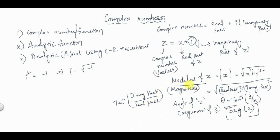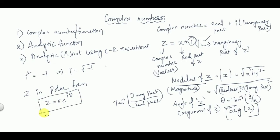This is how we find the modulus and argument of z when given the Cartesian form. Similarly, z in polar form is given by z = r·e^(iθ), where r = √(x² + y²) and θ = tan⁻¹(y/x) — this is the angle and this is the magnitude.